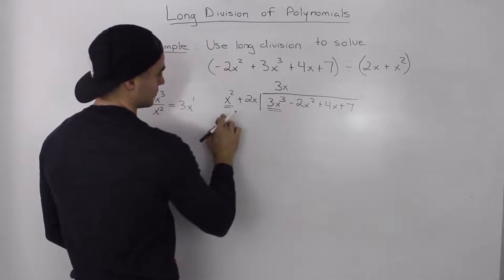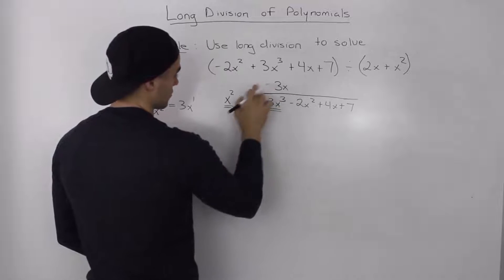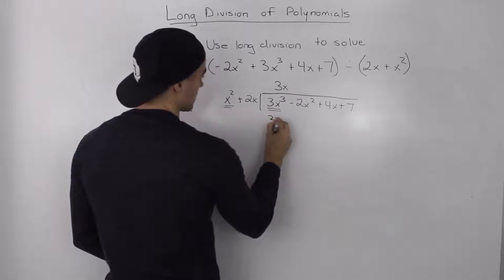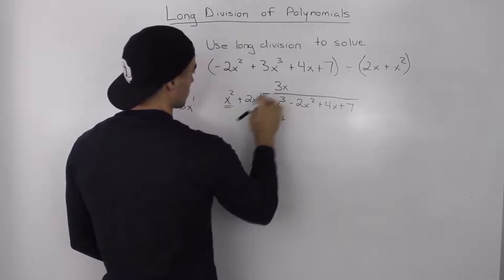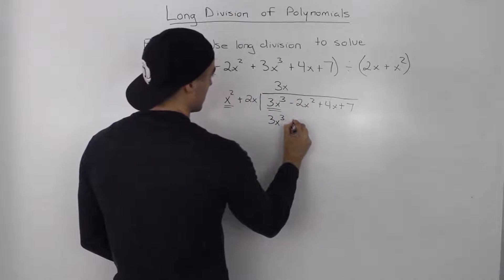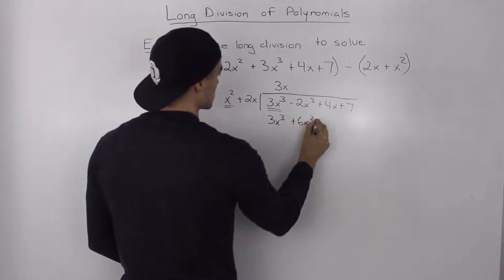We take this 3x, multiply it by the divisor, so 3x times x squared is 3x cubed. 3x times 2x is positive 6x squared.